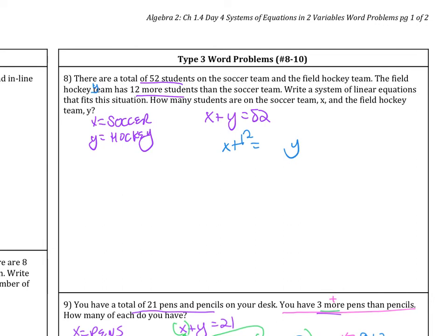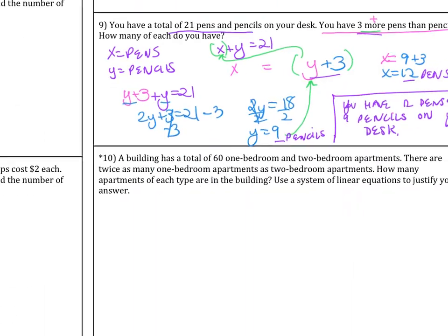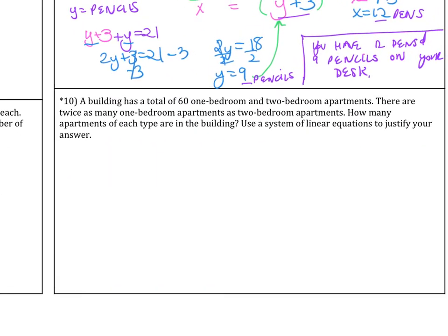And then you solve again by substitution. Let me write this a little clearer for you. And so that should work out for you. Now let me tell you the answer to that one. So the hockey team y is going to equal 32, and the soccer team x is going to equal 20. Hopefully that helps you out. Make sure you show all your work, of course. And then let me just show you how to set up number 10.